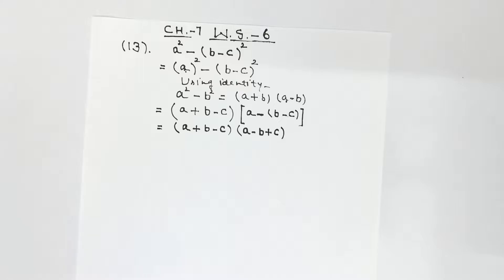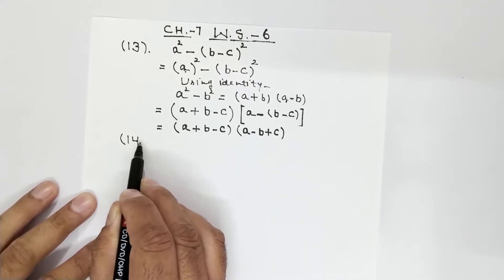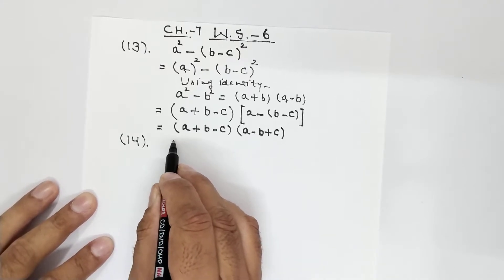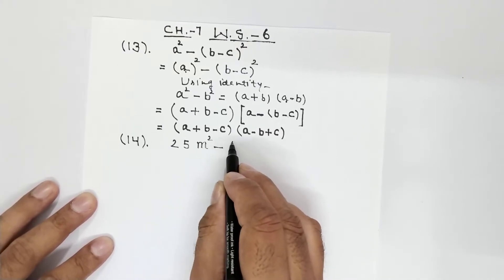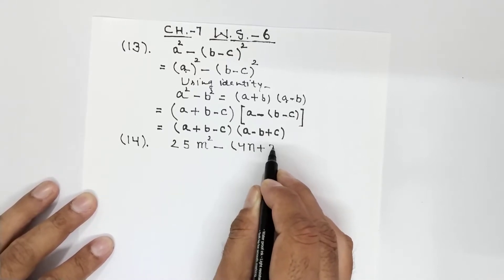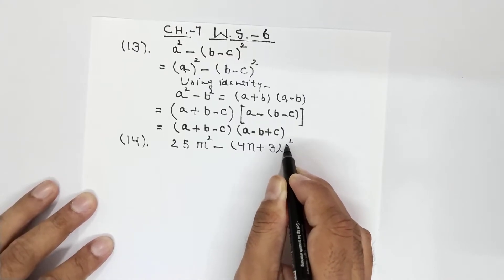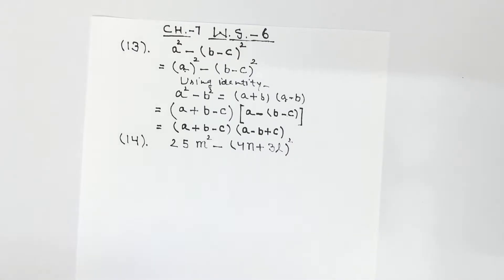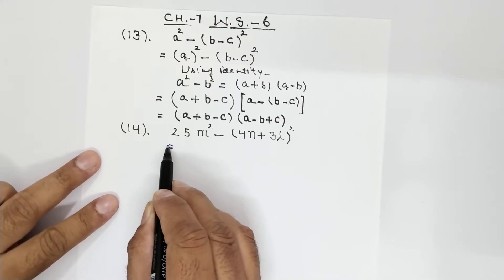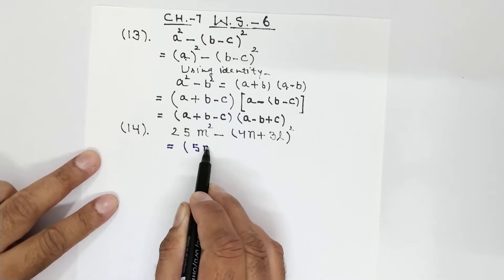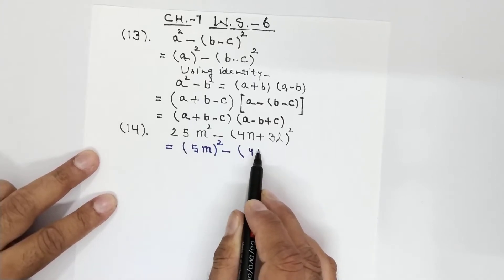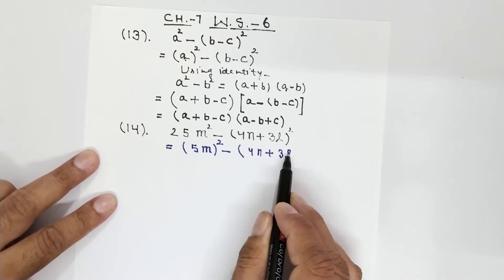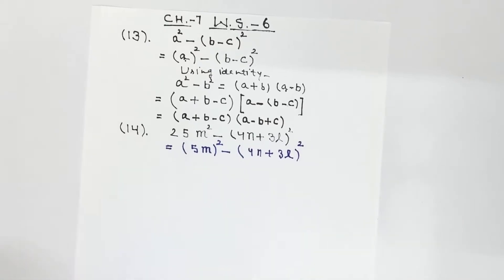So this was the factorization of question 13. Now question number 14 is also similar: 25m² minus (4n plus 3l) whole square. We will move ahead for this question. 25m² can be written as (5m) whole square, minus (4n plus 3l) whole square — leave that as it is.